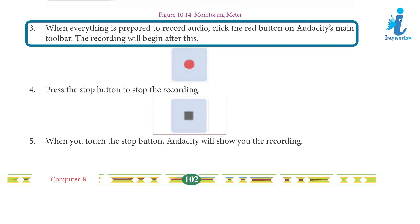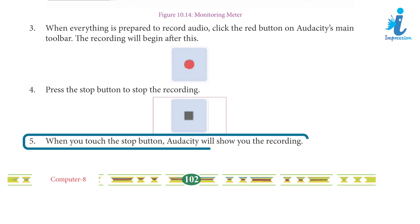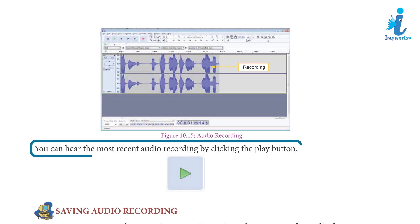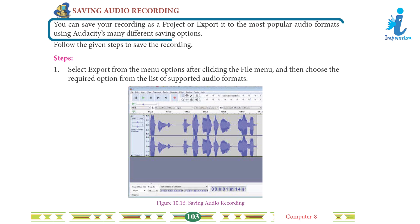The recording will begin after this. Step 4: Press the Stop button to stop the recording. Step 5: When you press the Stop button, Audacity will show you the recording. You can hear the most recent audio recording by clicking the Play button. Step 6: Saving Audio Recording: You can save your recording as a project or export it to the most popular audio format using Audacity's many different saving options.